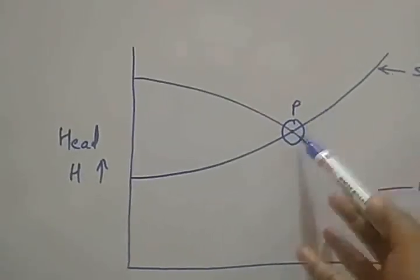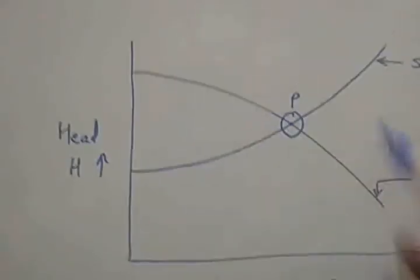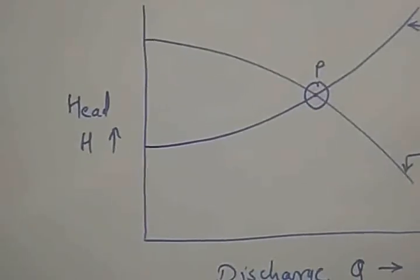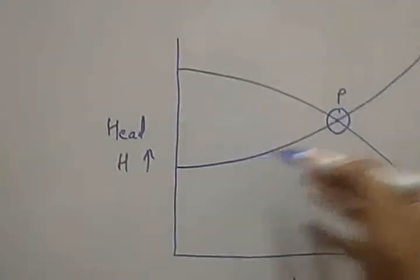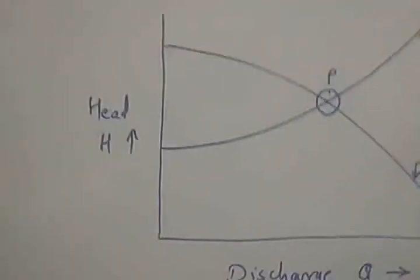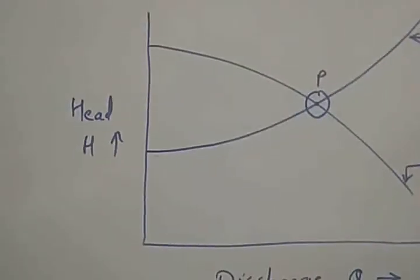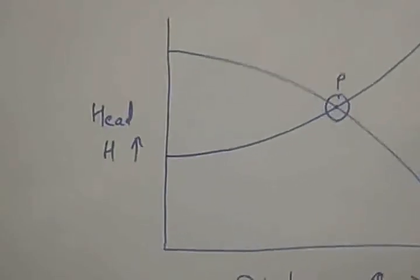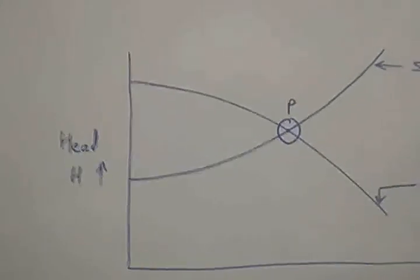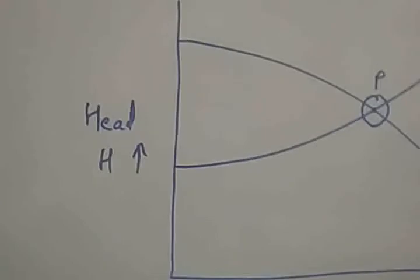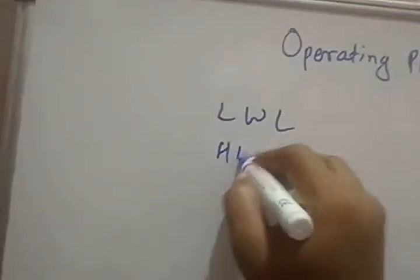Point P gives the head demanded by the system as well as the operating head of the pump for a particular discharge. If the system head curve changes, then the point P will be shifted. This significant change occurs because of the change in the level of the sump, and there are different system head curves corresponding to lower water level and higher water level.